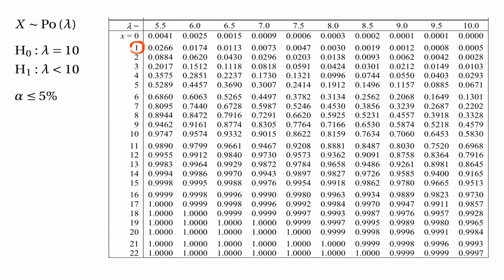What if x is equal to 1? Here we'd be interested in the probability that x is less than or equal to 1, and the table tells us that probability is 0.0005 — much smaller than 5%. So we'd end up rejecting the null hypothesis, meaning 1 is also inside our critical region. The same with 2: the probability that x is less than or equal to 2 is 0.0028, which is smaller than 5%, so 2 is inside the critical region.